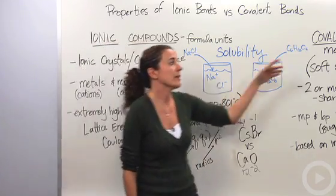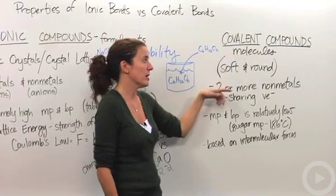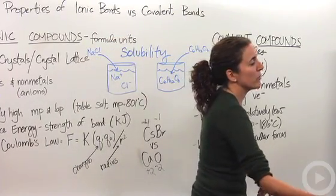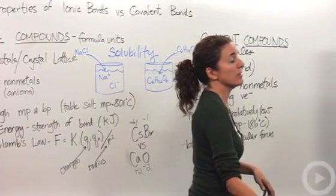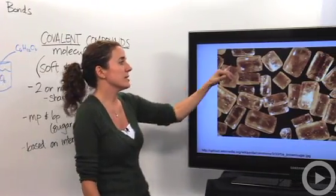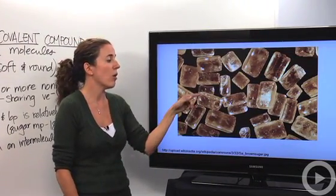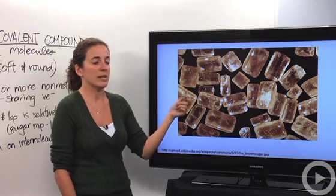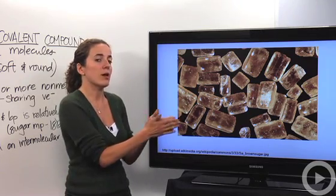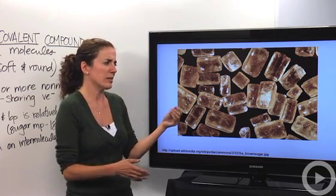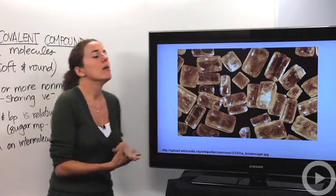If we compare it to covalent compounds, we're going to call them molecules. They're actually soft and round. If we were to look at a picture of a covalent compound, this is sugar - notice it has softer edges, much more smooth to the touch. There's no hard spots or pointy spots; it's very soft and smooth comparatively.